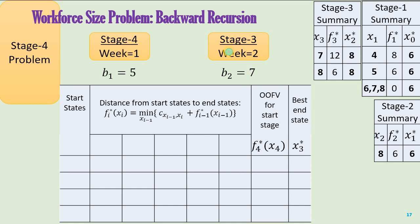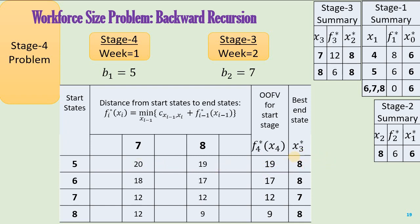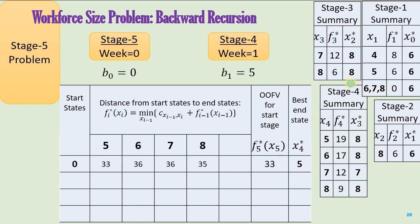We move to the stage four problem. The possible start states are 5 through 8, and the possible end states are 7 or 8. Going from 5 to 7 requires hiring two employees in the current stage, plus the previous cost of 12 units for state 7. Going from 5 to 8 incurs the cost of hiring three employees plus 6 units from the previous stage for state 8. The optimum is the minimum of these, with the best end state being 8. Here is the summary of the stage four problem.